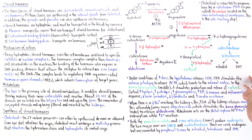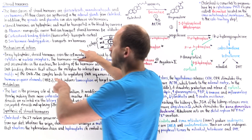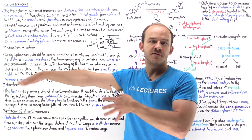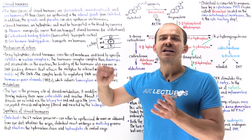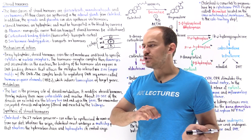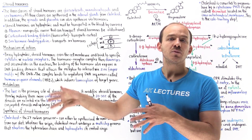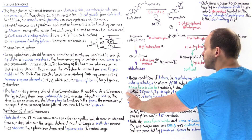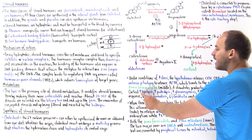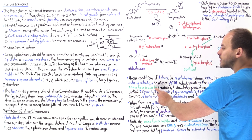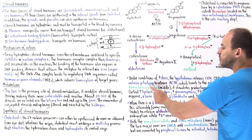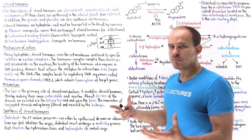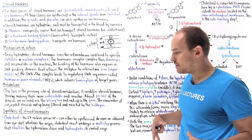Cortisol is picked up in the bloodstream by corticosteroid binding globulin and transported to many cell types including adipose cells, liver cells, and fibroblasts. Cortisol increases lipolysis in adipose tissue, which redistributes fat in the body and can cause central obesity. It also increases proteolysis in skeletal muscle.